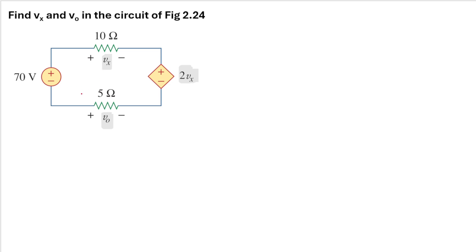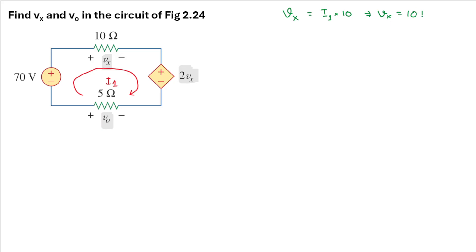We will use KVL, so we need the loops. Let's name this loop here as i1. From loop i1 we can calculate Vx. The current is flowing from the positive side to the negative side, so our sign will be positive: Vx equals 10·i1.